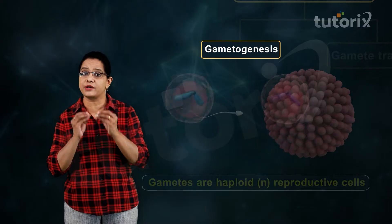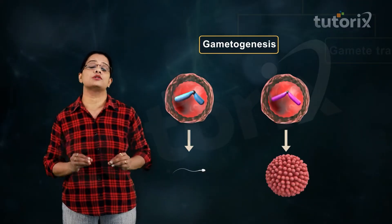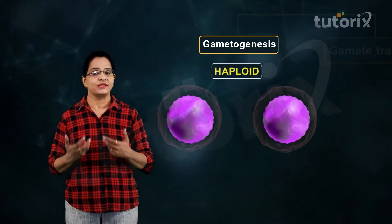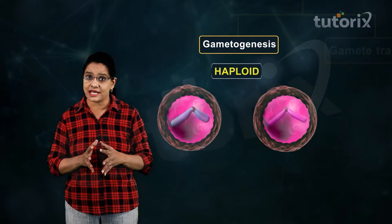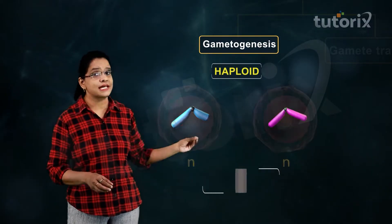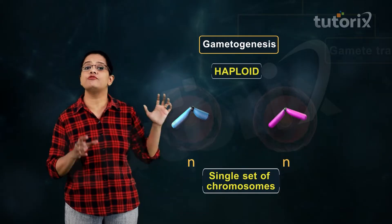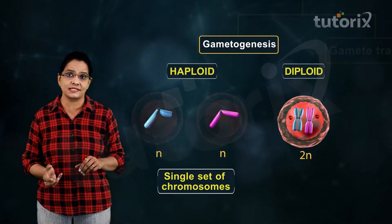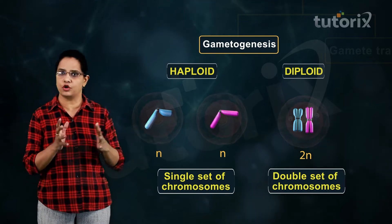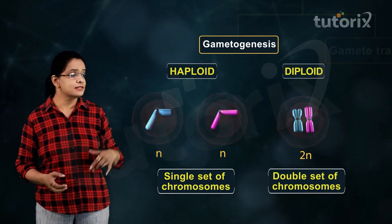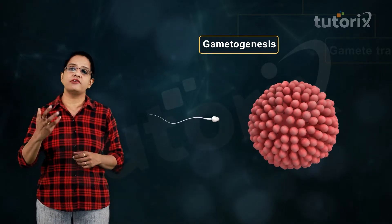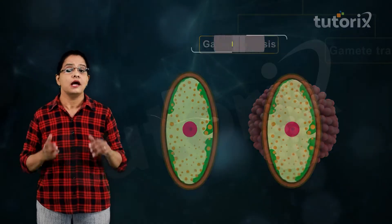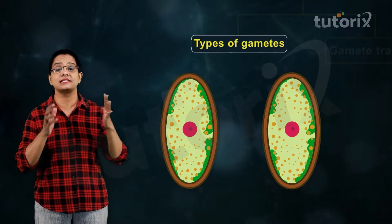These haploid reproductive cells are produced by the process of meiosis. Haploid cells have a single set of chromosomes in them, as compared to normal somatic cells which have a double set of chromosomes. Gametes are basically reproductive cells and their formation is gametogenesis.